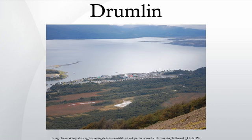Drumlins and drumlin clusters are glacial landforms composed primarily of glacial till, which have been extensively studied. Geologists have proposed several theories about their origin. They can form both near the margin of glacial systems and within zones of fast flow deep within the ice sheet. They record the direction of ice movement at the time of formation.